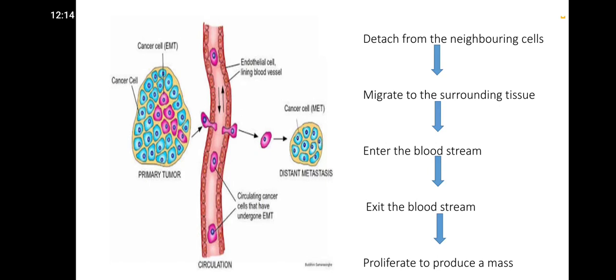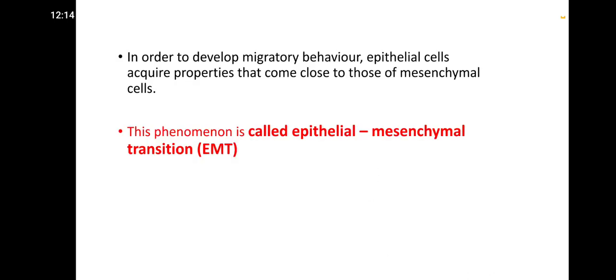This is a pictorial representation of invasion and metastasis. A cell detaches from neighboring cells, migrates to the surrounding tissue, enters the bloodstream, exits the bloodstream, and proliferates to produce a mass. This is how a malignant cell migrates from one site to another — that is metastasis.